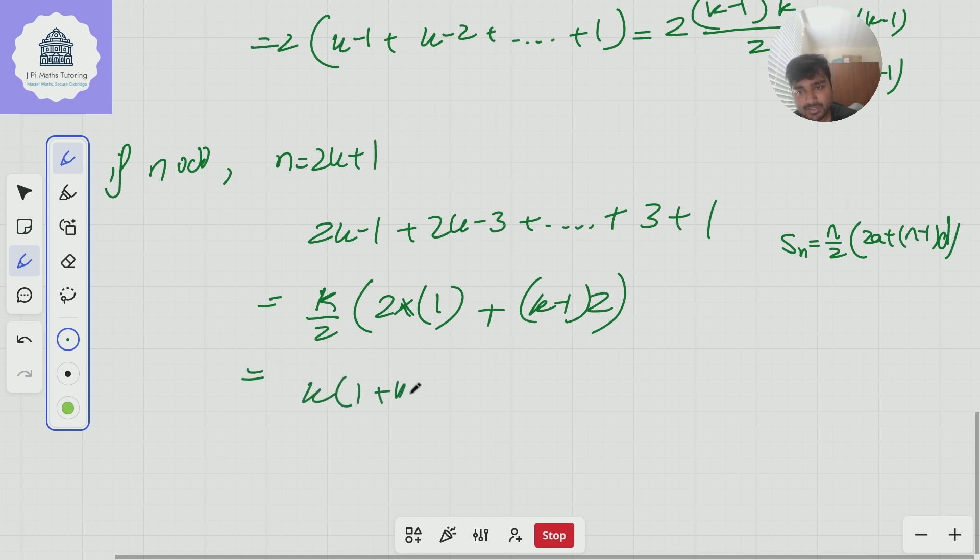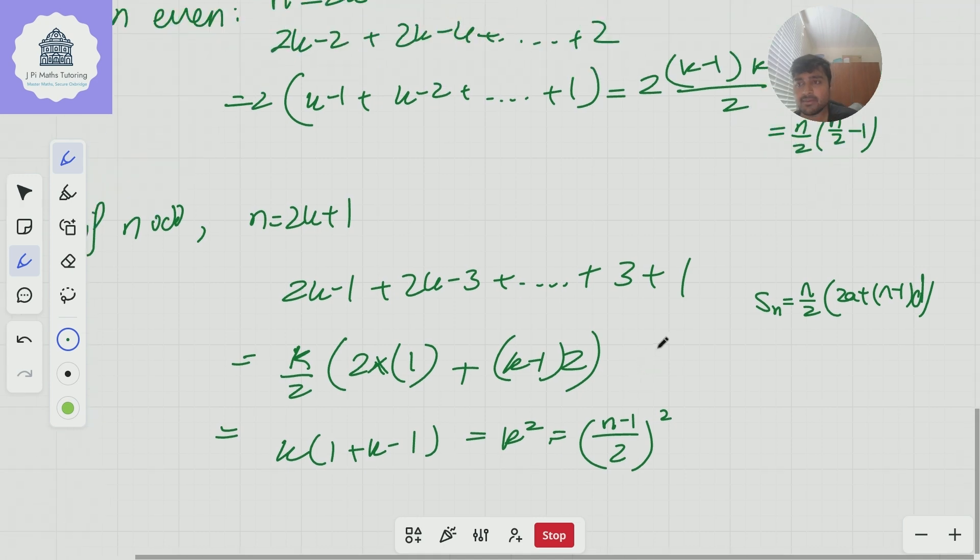And if I expand this out I can cancel the twos and I get k one plus k minus one which is just k squared like so. So if n is odd you get k squared which is just n minus one over two squared.